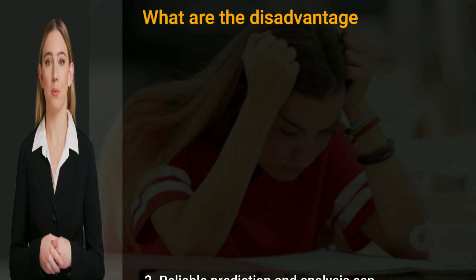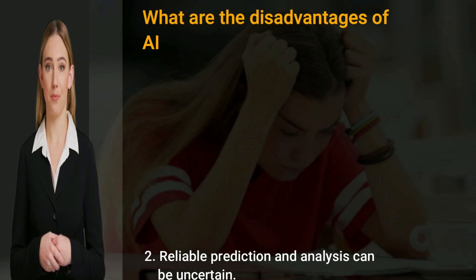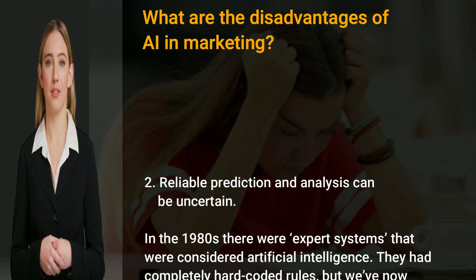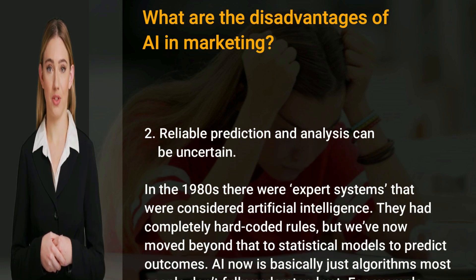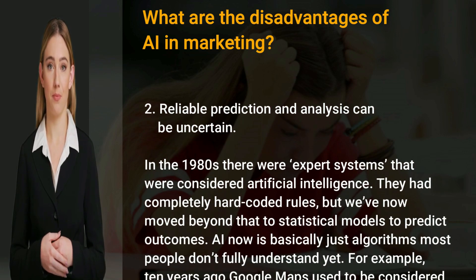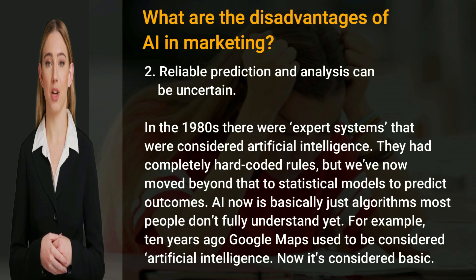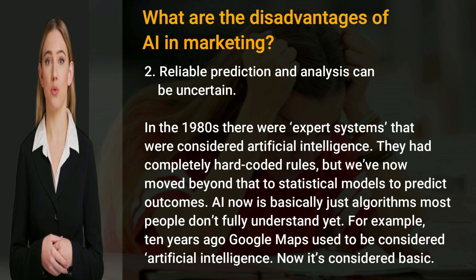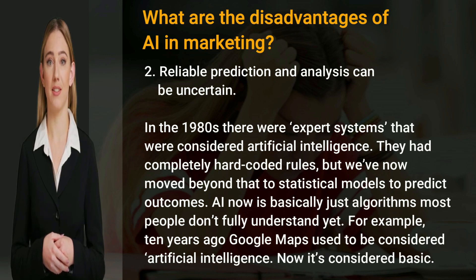Two: reliable prediction and analysis can be uncertain. In the 1980s there were expert systems that were considered artificial intelligence — they had completely hard-coded rules. But we have now moved beyond that to statistical models to predict outcomes. AI now is basically just algorithms most people don't fully understand yet.